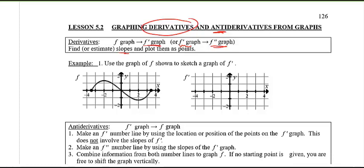Example number one: look at this function f — here's my original function — and I'm asking you to try to sketch the graph of f prime, or the derivative. Our goal is to figure out the slopes at each of these points. So if I draw tangent lines, I'm thinking: here's a tangent line here, maybe this one over here, and then this one down here, then back up here.